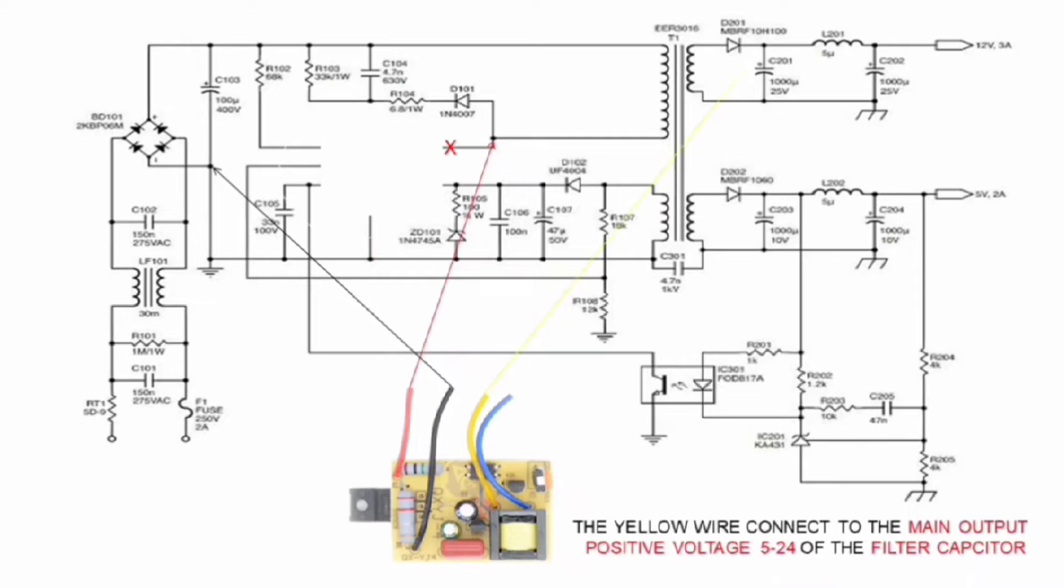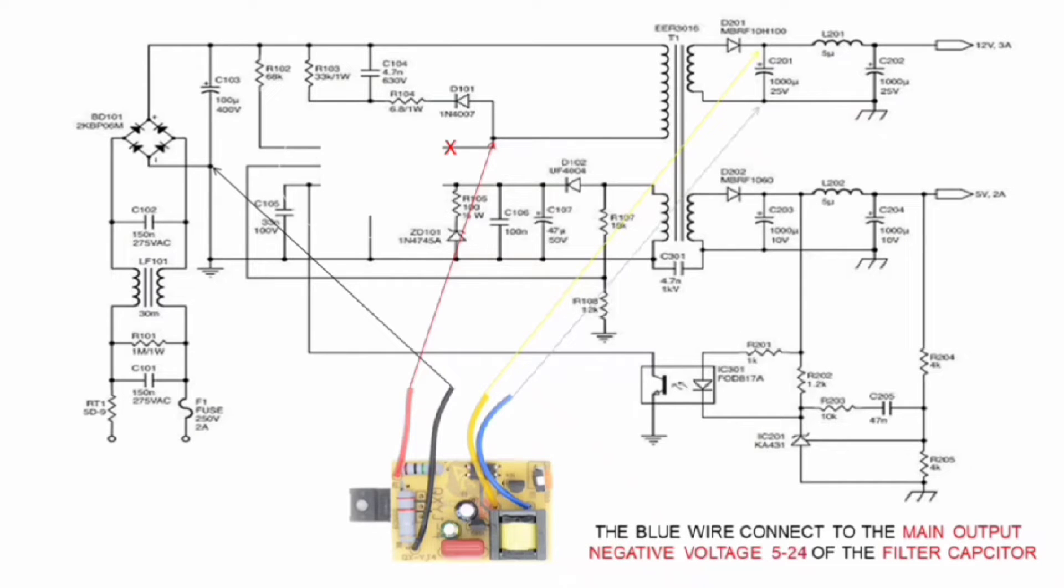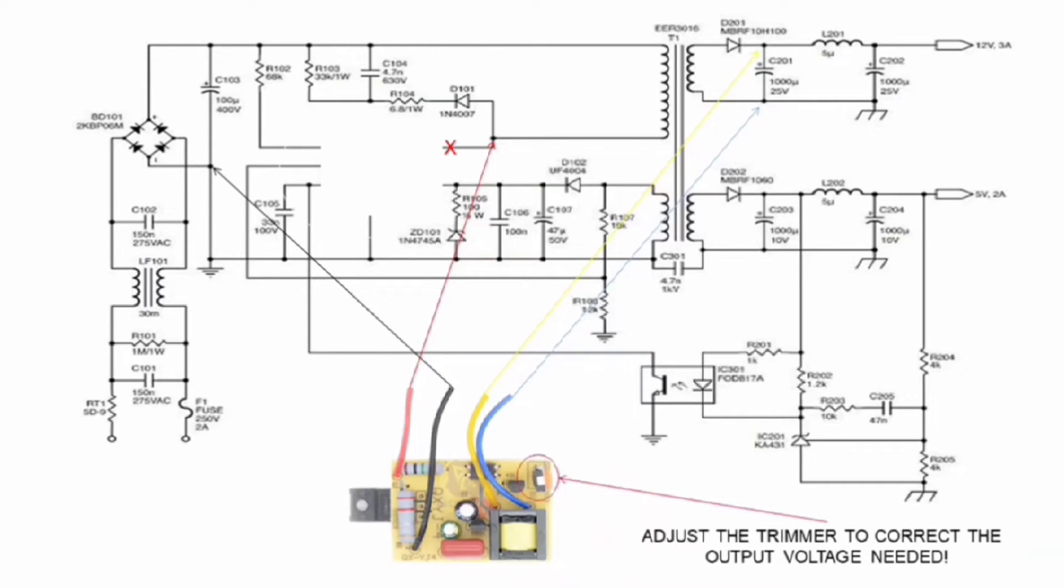The yellow wire connect to the main positive output of the 5 to 24 volts filter capacitor. And the blue wire connect to the main negative output of the 5 to 24 volts filter capacitor. Adjust the trimmer to correct the output voltage needed.